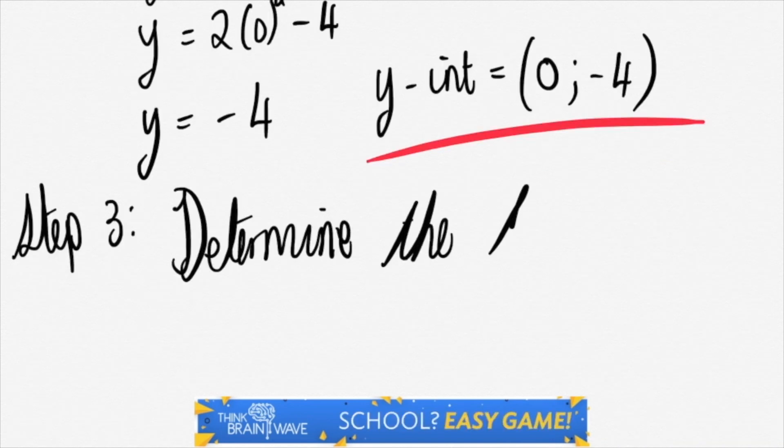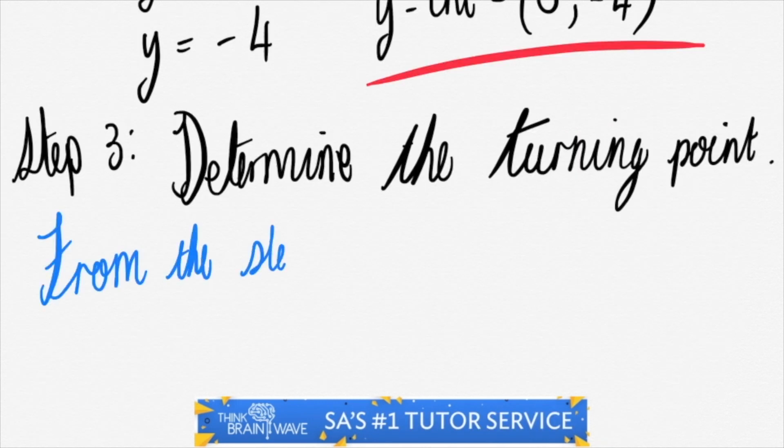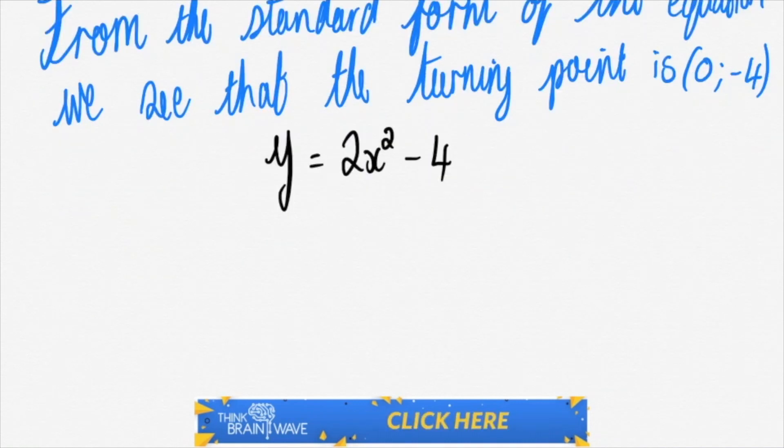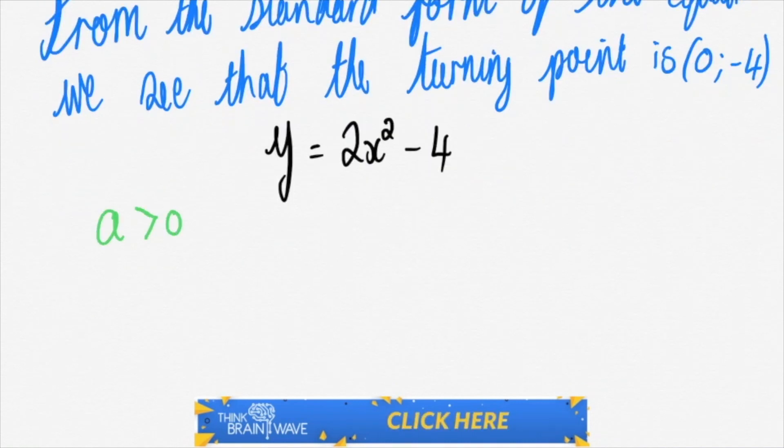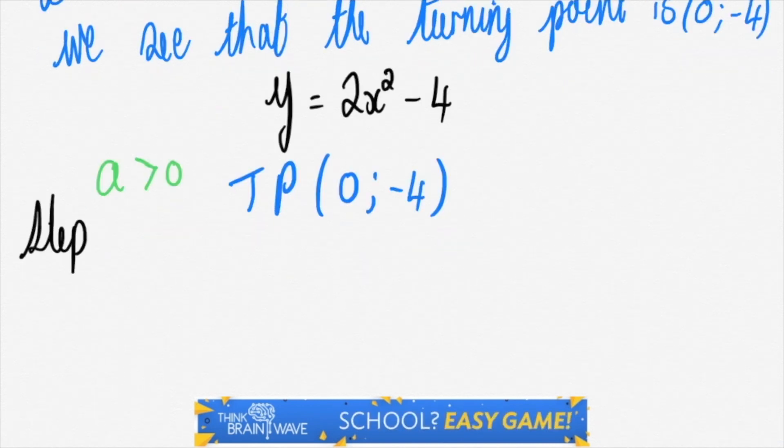Now let's do step 3. Let's determine the turning point. We have y is equal to 2x-squared minus 4 again. We say our a is positive. Therefore we've got a smiley face turning point, and it's 0 minus 4 again just to repeat.